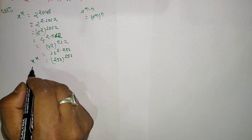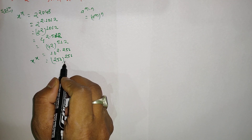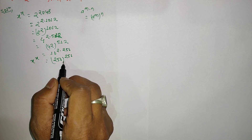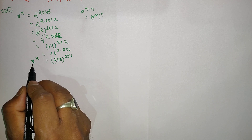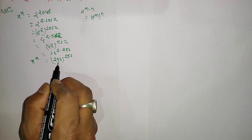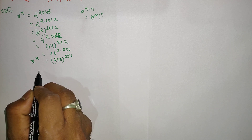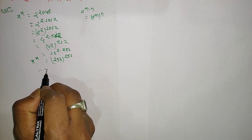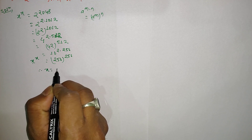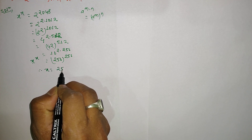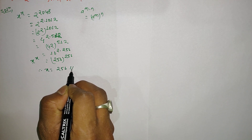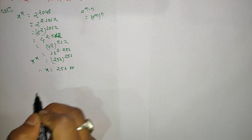Since the left-hand side and right-hand side are in the same form — x^x = 256^256 — we can directly write x equals 256. Therefore, x = 256 is the answer to this question.